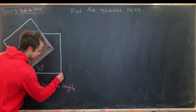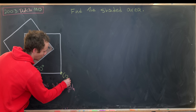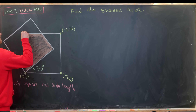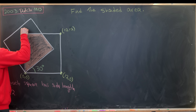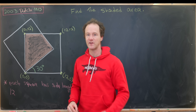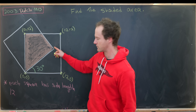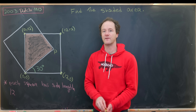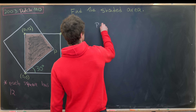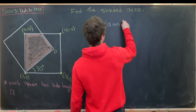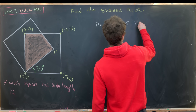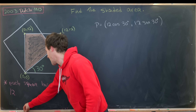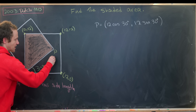This point up here is (12, 12), and then this point over here is (0, 12). Now we're going to start filling in the rest. Notice this point right here — I'll call it P — will be of the form: P equals 12 times cosine of 30 degrees, and 12 times sine of 30 degrees. We can see that just by completing this right triangle. The height of the right triangle will be the y-coordinate of P, whereas the base will be the x-coordinate of P.